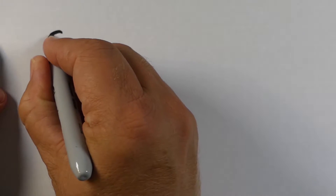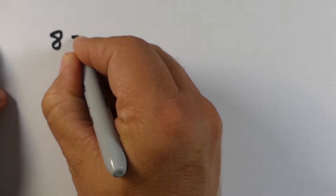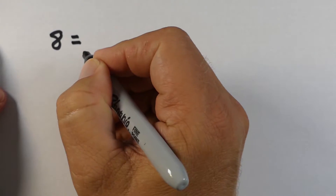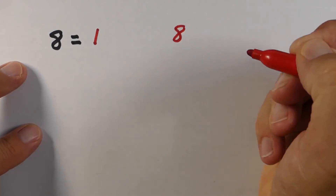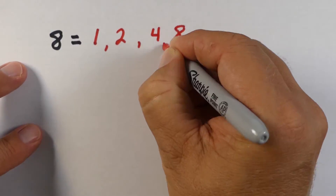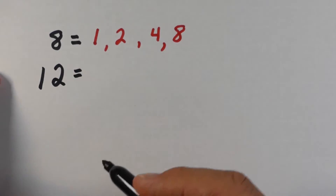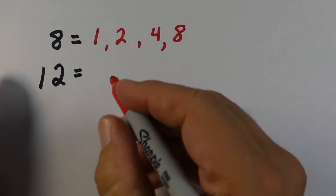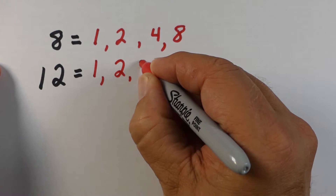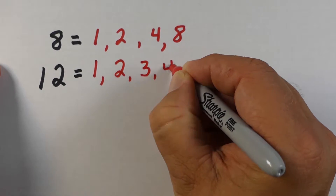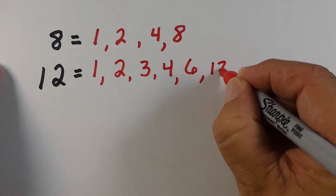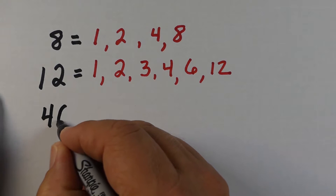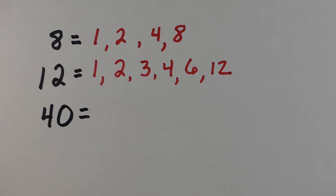Before we look at greatest common factor and least common multiples, it's important to understand a couple basics. First, we're going to look at factors. Factors are the numbers that we can multiply together to get a number. For example, the factors of eight would be one, two, four, and eight, because we can multiply one times eight and two times four. If we look at twelve, the factors are one, two, three, four, six, and twelve — like three times four, two times six, one times twelve.